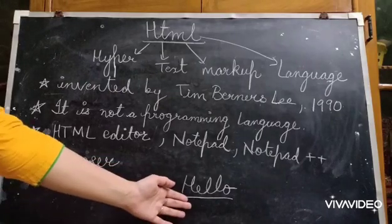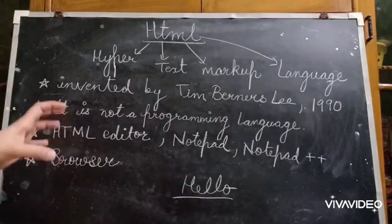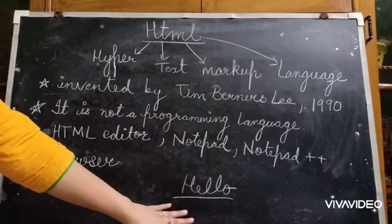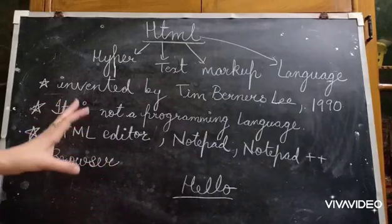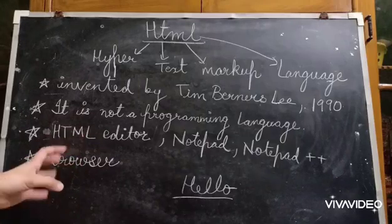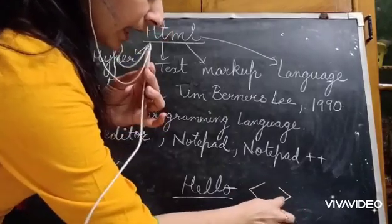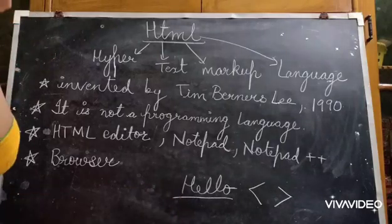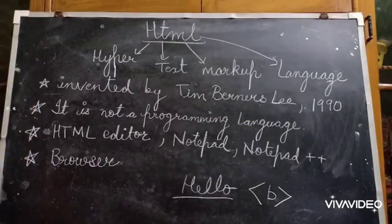Suppose you have a word, say 'hello.' If you click the Bold option in MS Word, your word becomes bold. Similarly, in HTML we have predefined tags written in angular brackets. For example, I have a tag called B. If I use this tag, then my word 'hello' will become bold in bold letters.